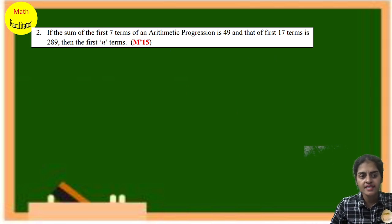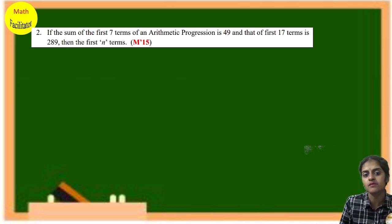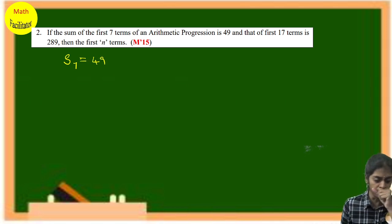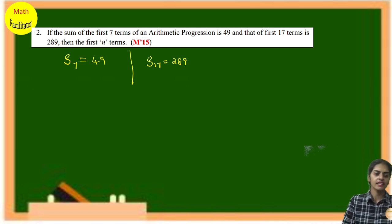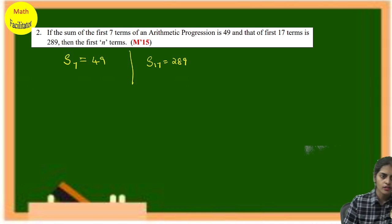Next question: if the sum of the first 7 terms of an AP is 49 and the sum of the first 17 terms is 289, find the sum of the first n terms. So S7 = 49 and S17 = 289.